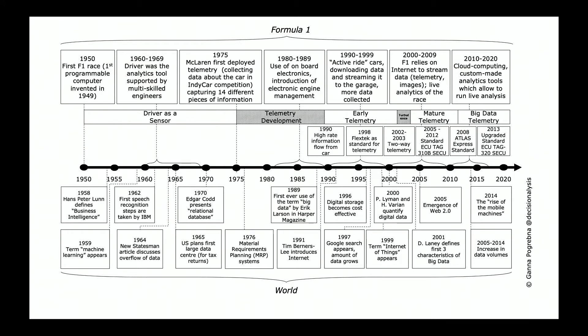From 1960 to 1969, the driver was the analytical tool, supported by multi-skilled engineers and mechanics. By 1975, teams started to think about how to collect data in Formula One more effectively. In 1975, McLaren first developed telemetry — collecting data about the car — in IndyCar competition, with 14 different pieces of information captured through various sensors. This is kind of the beginning of telemetry.